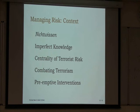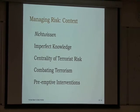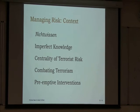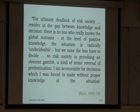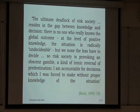Theoretically, this connects to Beck and Bauman's concept of Nichtwissen — relating to risk — this idea that we are increasingly finding situations of non-knowledge, where the science or evidence might take us some of the way but we don't really know for sure. States feel they have to act in situations with imperfect knowledge. Beck talks about the gap between knowledge and decision — situations where no one really knows the outcome, the situation is radically undecidable, but we nonetheless have to decide. Risk society is provoking an obscene gamble: I am accountable for decisions which I was forced to make without proper knowledge.